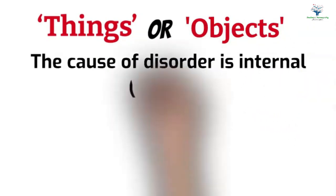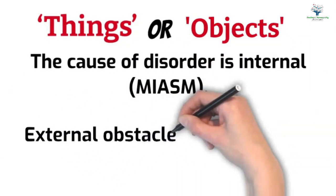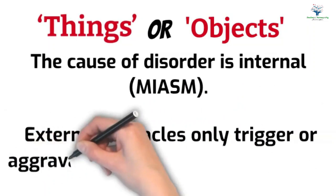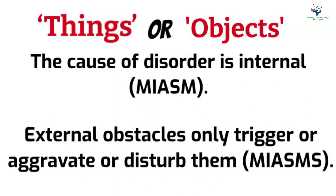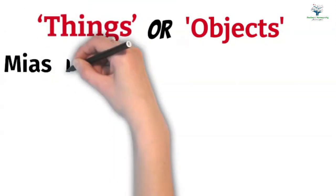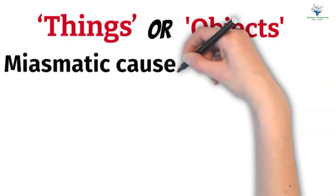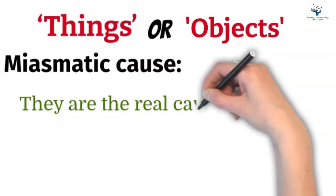The cause of the disorder is always internal. The external obstacles only trigger or aggravate or disturb them. Now coming to the invisible cause or the miasmatic cause, they are the real cause of the disease and can only be known by signs and symptoms.